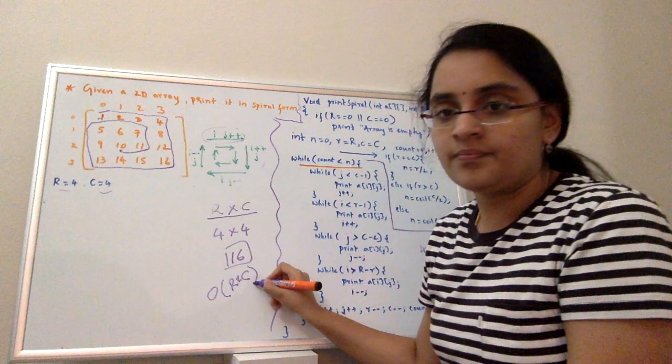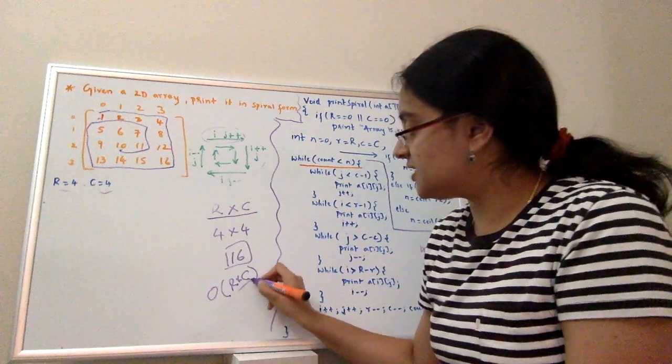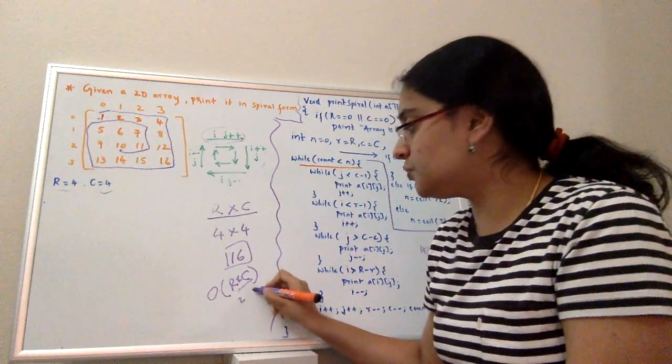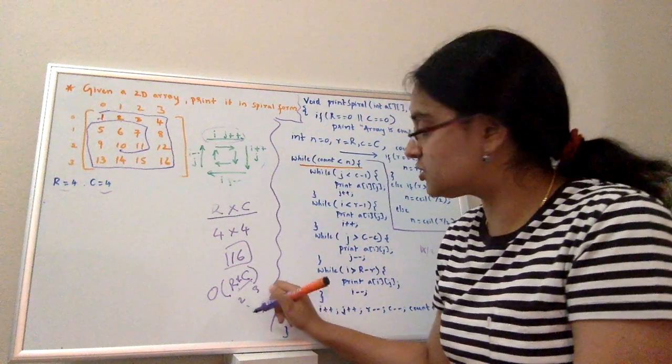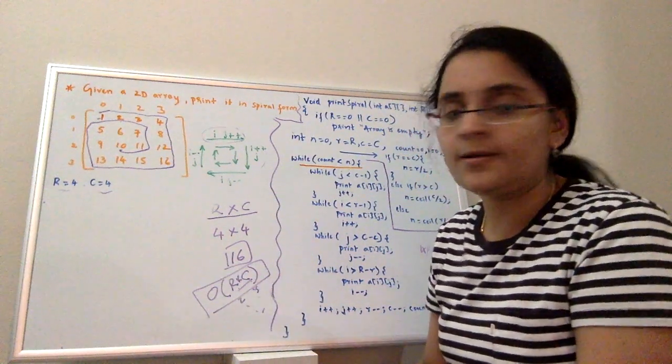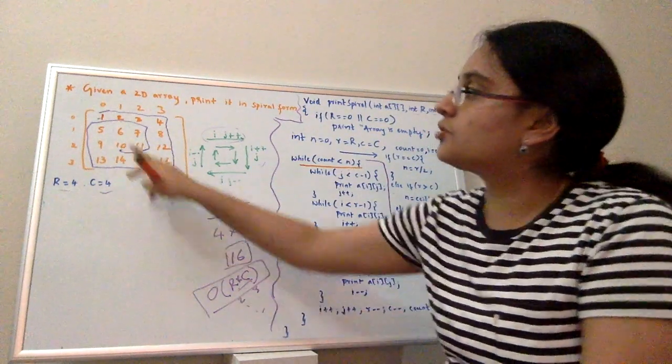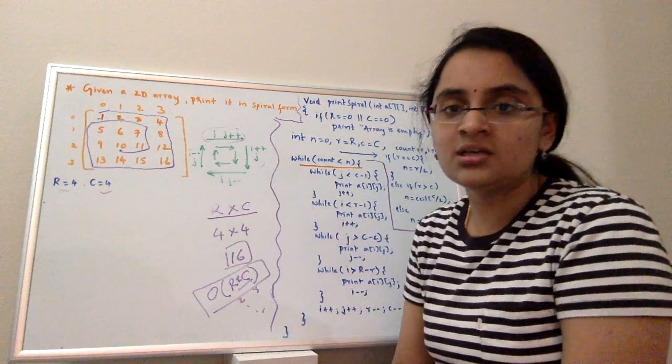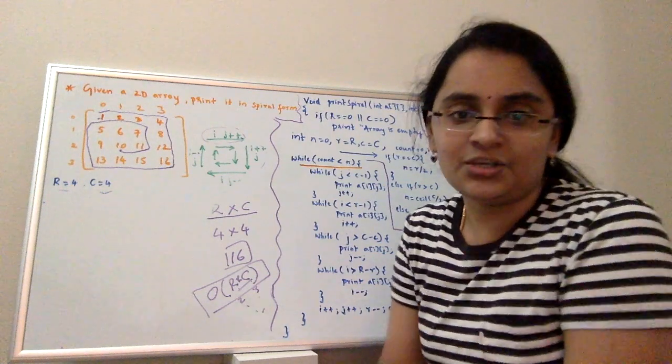But to generalize it, it's O of r into c. R could be 2, column could be 3, or it could be any number. So in general, the complexity of the solution is r into c. By this solution you're going to print the numbers in the spiral form. Thank you.